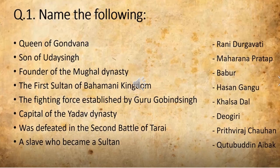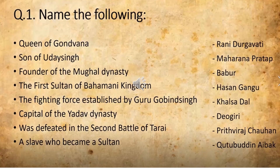I will read it out for revision. Queen of Gondwana — the answer is Rani Durgavati. Son of Uday Singh — the answer is Maharana Pratap. Founder of the Mughal dynasty — the answer is Babur. The first sultan of the Bahamani Kingdom. The fighting force established by Guru Gobind Singh. Capital of the Yadav dynasty.